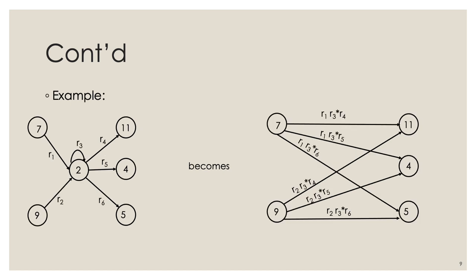Let's apply this to another example. We eliminate state number two where incoming states are 7 and 9, and outgoing states are 11, 4, and 5. We must create transitions from 7 to 11, 7 to 4, 7 to 5, and from 9 to 11, 9 to 4, 9 to 5, then aggregate the weights. For instance, from 7 to 11 the weight will be r1 · r3* · r4, with the loop r3 on state 2.